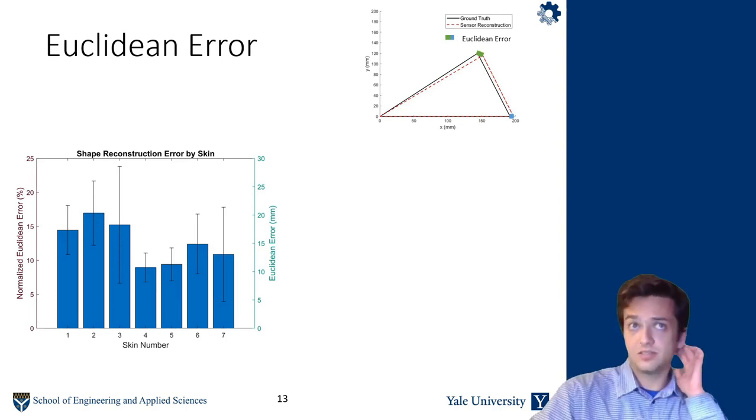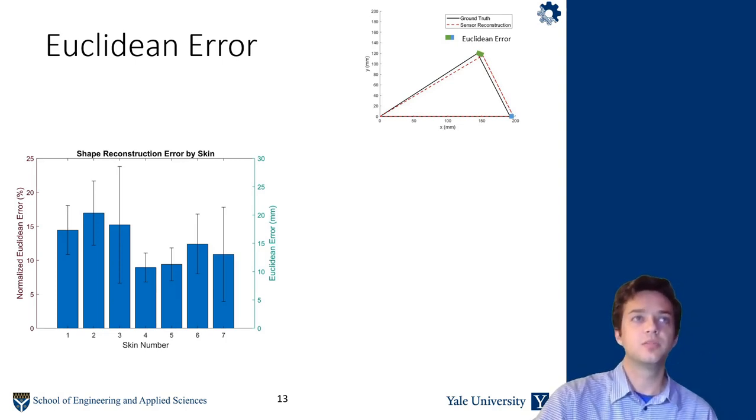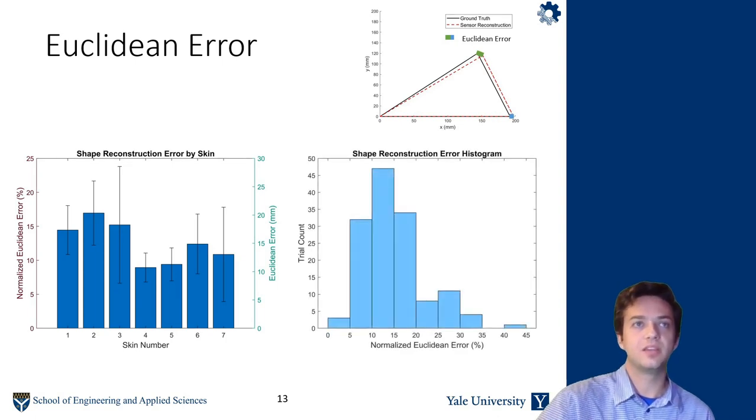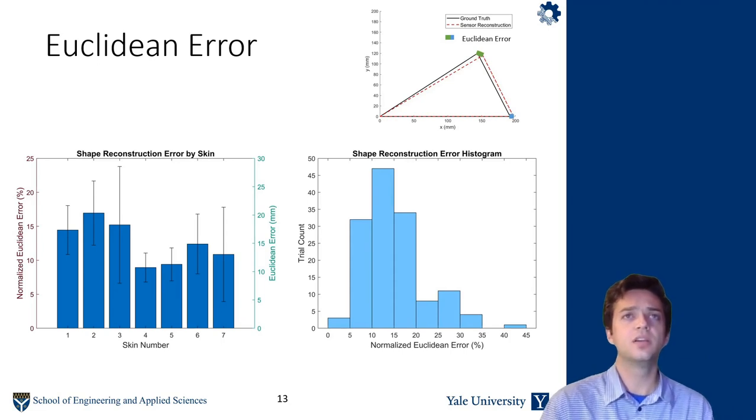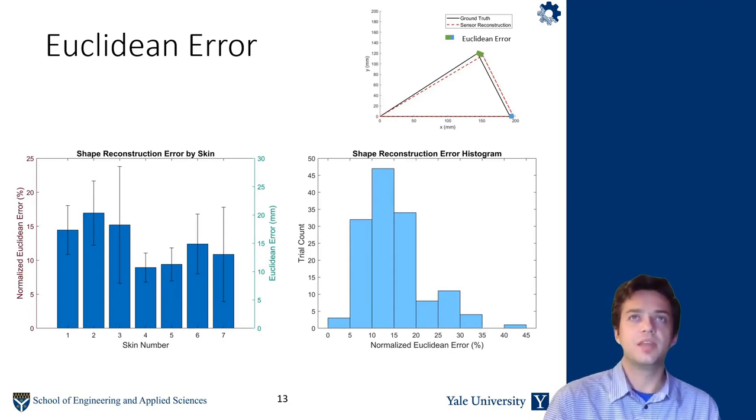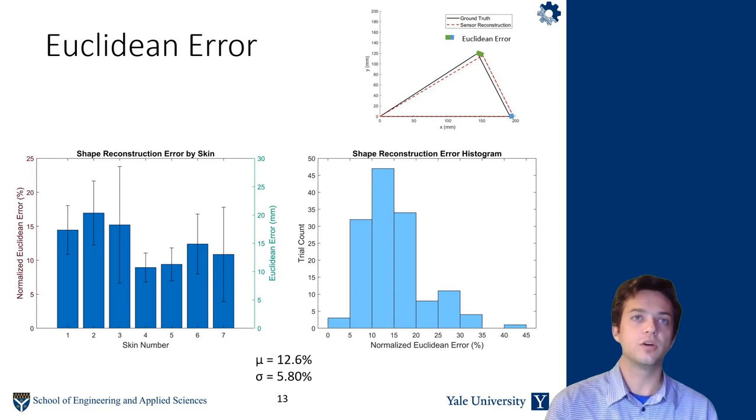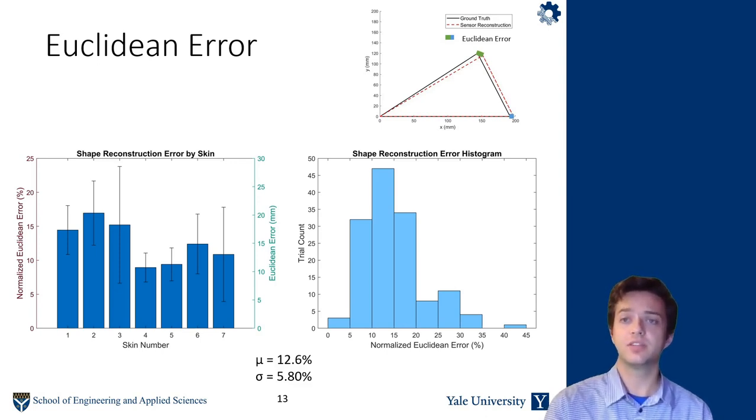And so with that definition we can quantify the Euclidean error. The right axis says the Euclidean error in millimeters, while the left it's normalized by the side length of the unstretched side length of one side of the triangle, which is 120 millimeters. And then you see that for separated by skin on the left, and then a histogram of all the normalized errors on the right. So overall we had 12% error. Again, that's 12% of one of this characteristic length.